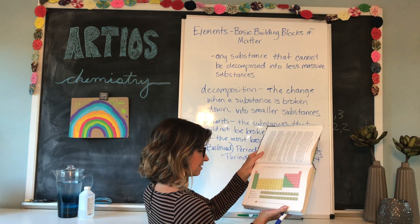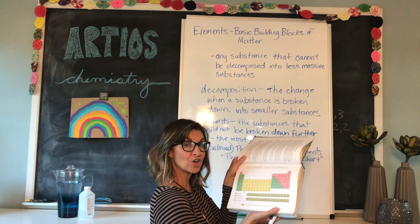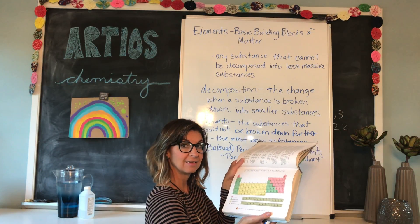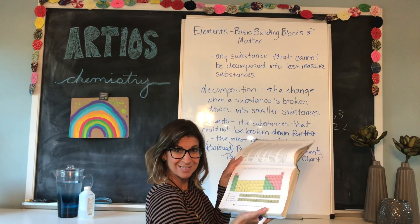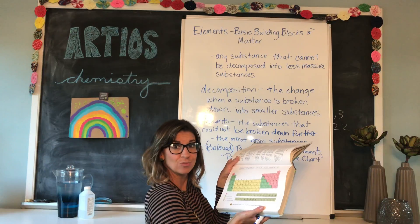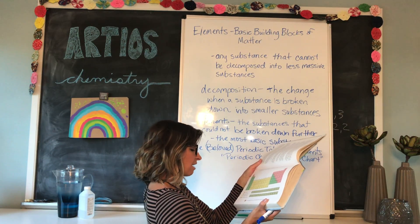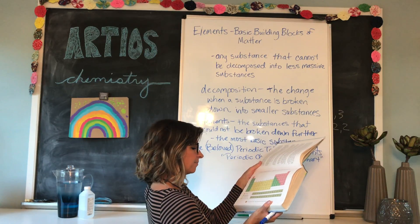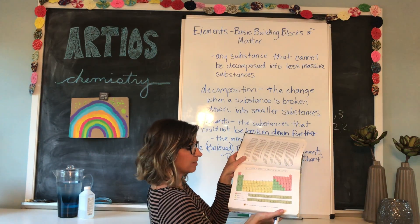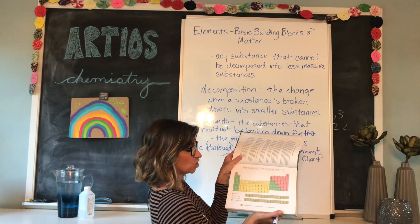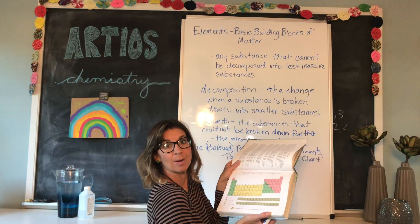Some of these elements don't occur naturally on Earth — scientists have actually created some elements. How did they do that? I do not know, but it's true. So 92 occur naturally on the Earth; the others have been created. That's why at the moment the periodic table shows 112 — but who knows, next year they could come up with 113.